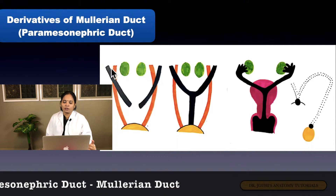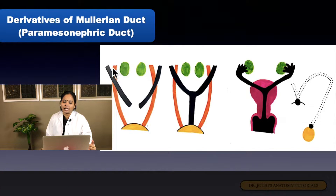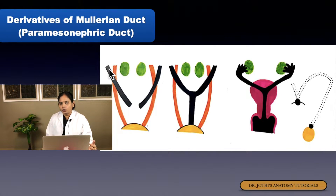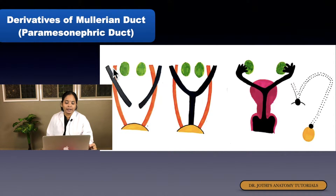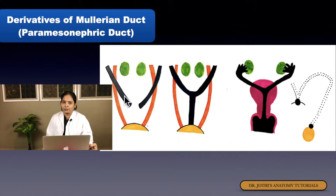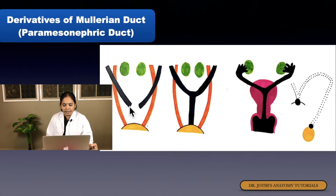By its name, paramesonephric means it is lateral to the mesonephric duct. At the sixth week of intrauterine life, some celomic epithelial cells are deposited on the lateral wall of the mesonephric ridge and form the paramesonephric duct. Initially the paramesonephric duct is lateral to the mesonephric duct. At its caudal end, it turns horizontally, crosses the mesonephric duct ventrally, goes medial to the mesonephric duct, and finally opens into the urogenital sinus.